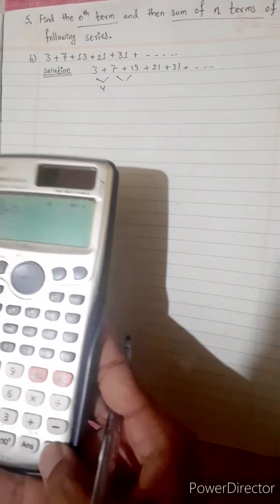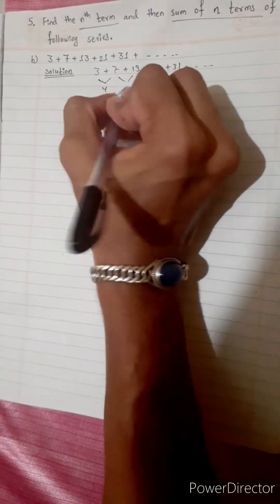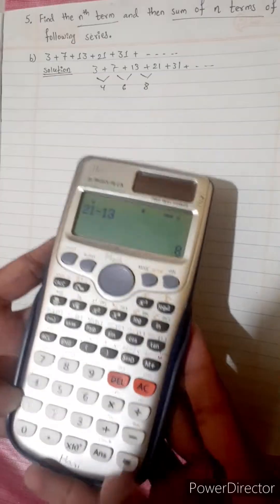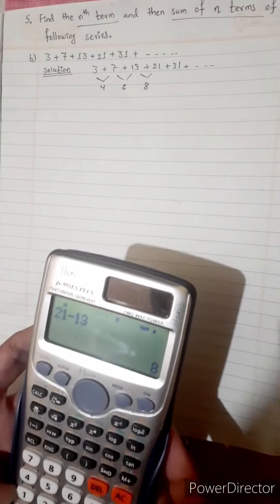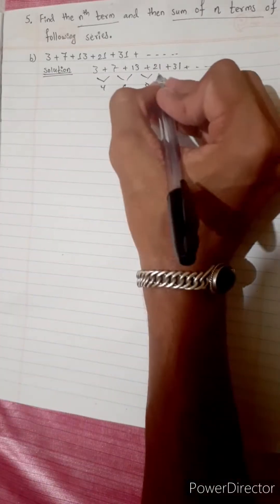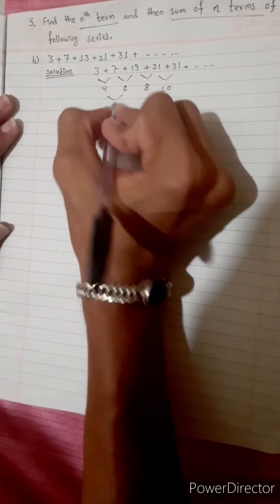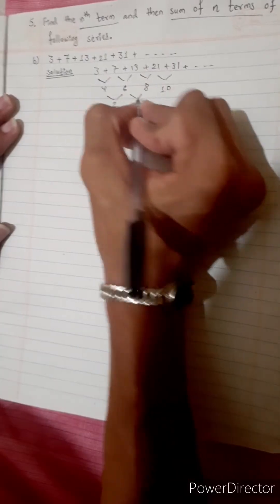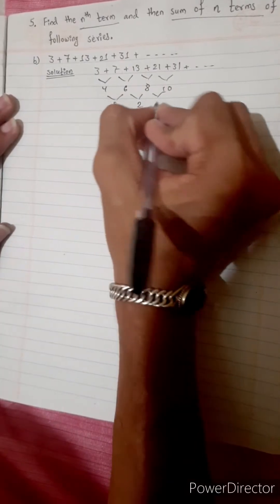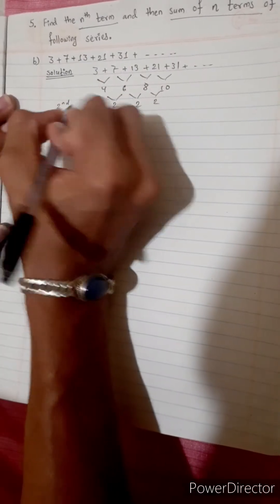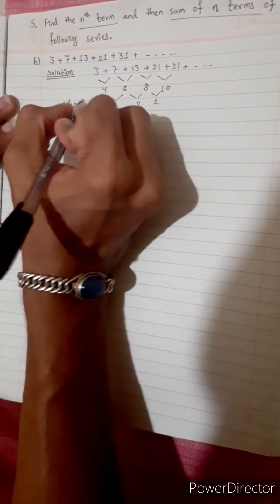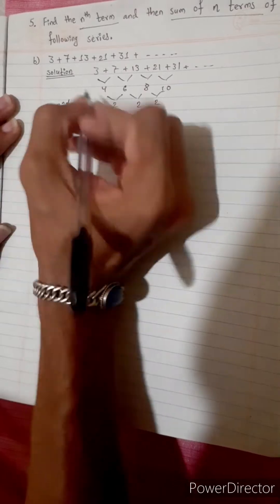13 minus 7 is 6. 21 minus 13 is 8. 31 minus 21 is 10. The second difference is 2, 2, 2. So the second difference is 2.